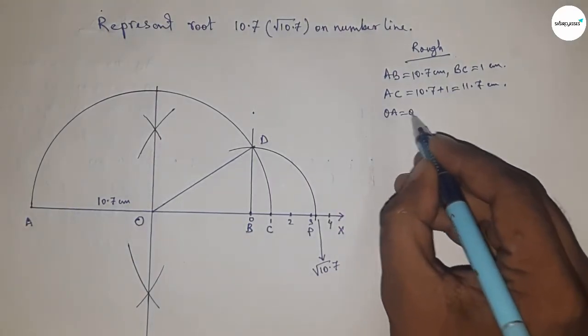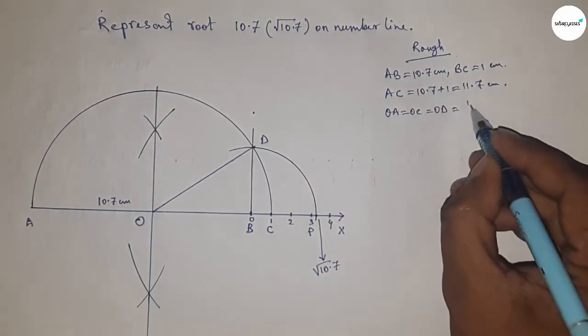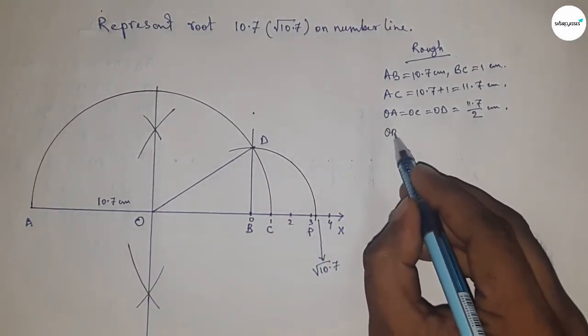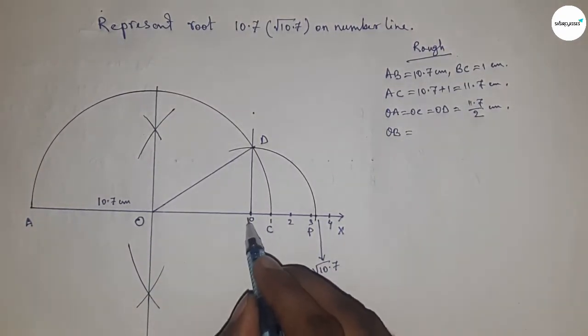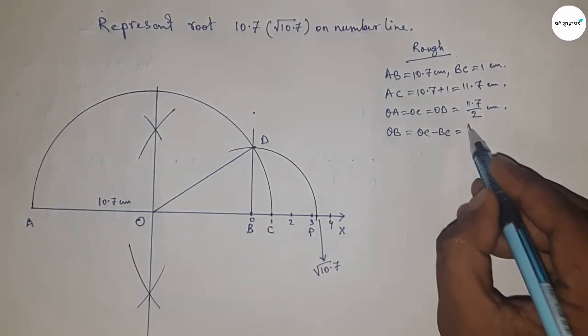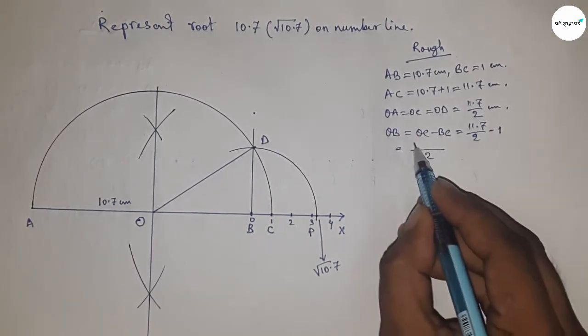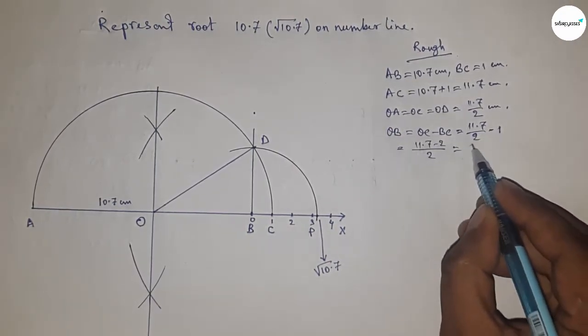Now radius OA, OC, and OD equal to 11.7 by 2 centimeter. Now length OB equal to OC minus BC. Putting the value of OC and BC and calculating this, so this is 9.7 by 2 centimeter.